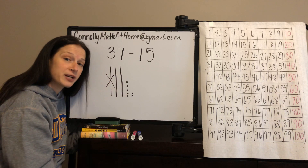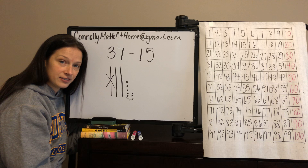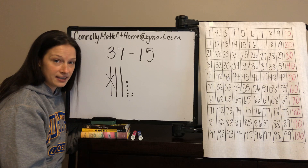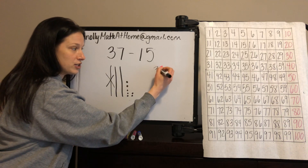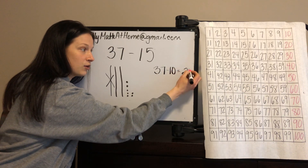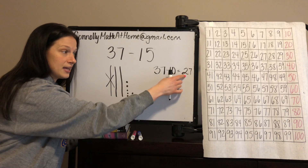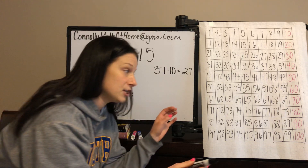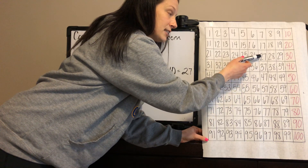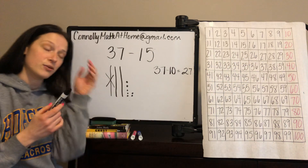When I cross off one group of 10, nothing happens to the singles — everything stays the same over there. All that changed was the groups of 10. When we do 37 minus 10 we're left with 27. The only thing that changed was the digit in the tens place. On the hundreds chart, if we're starting at 37 and subtract 10, the ones place doesn't change — just one group of 10 is taken away and we're at 27.